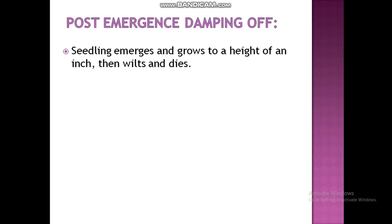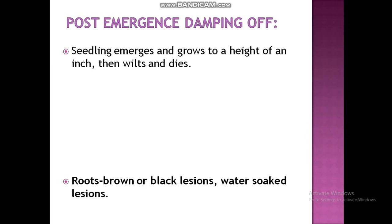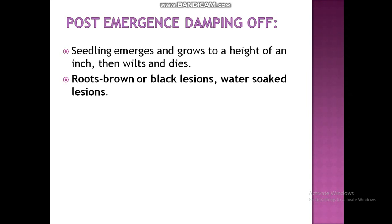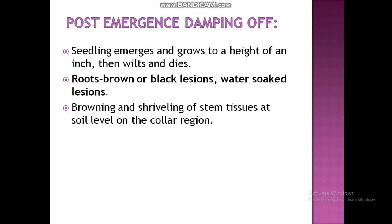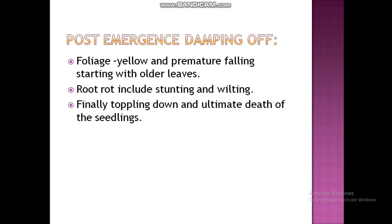Post-emergence damping off means the seedling emerges and grows to about an inch in height, then wilts and dies. Brown or black lesions are visible on the roots, with browning and shriveling of stem tissue at the soil level. Foliage yellows and older leaves fall prematurely. Root rot causes stunting and wilting, finally leading to toppling and ultimate death of the seedling.